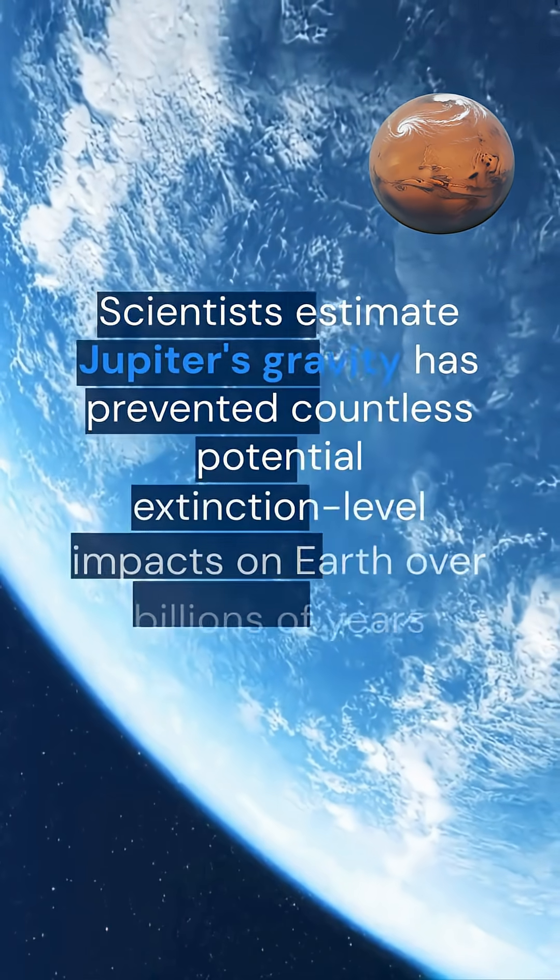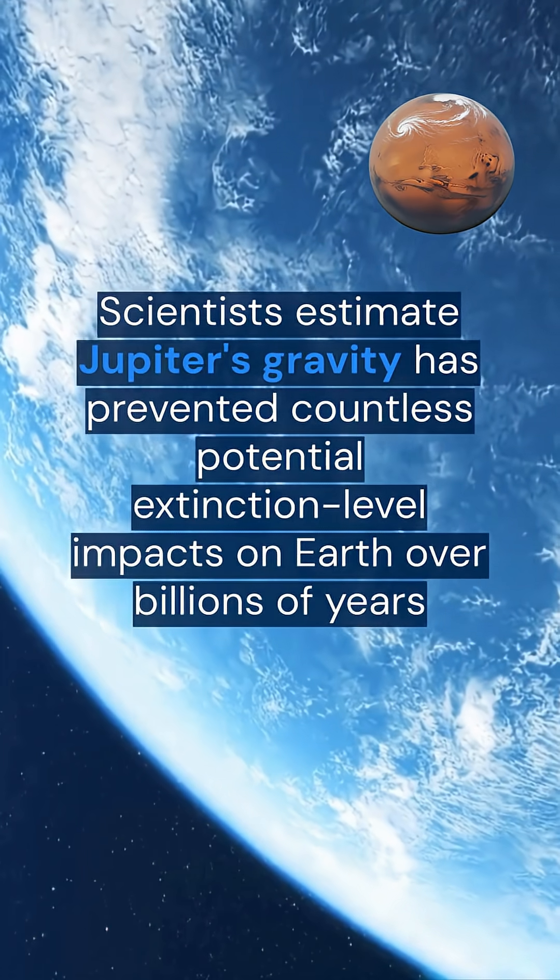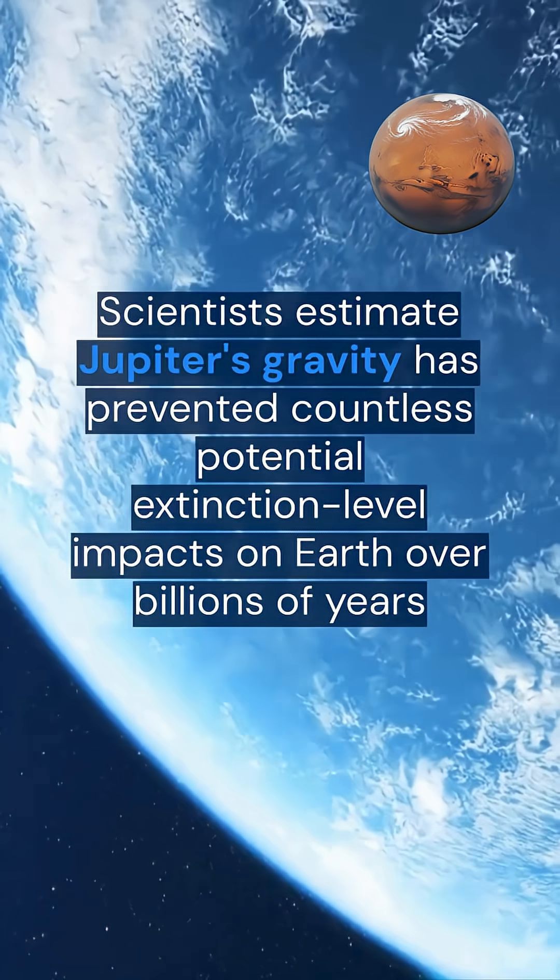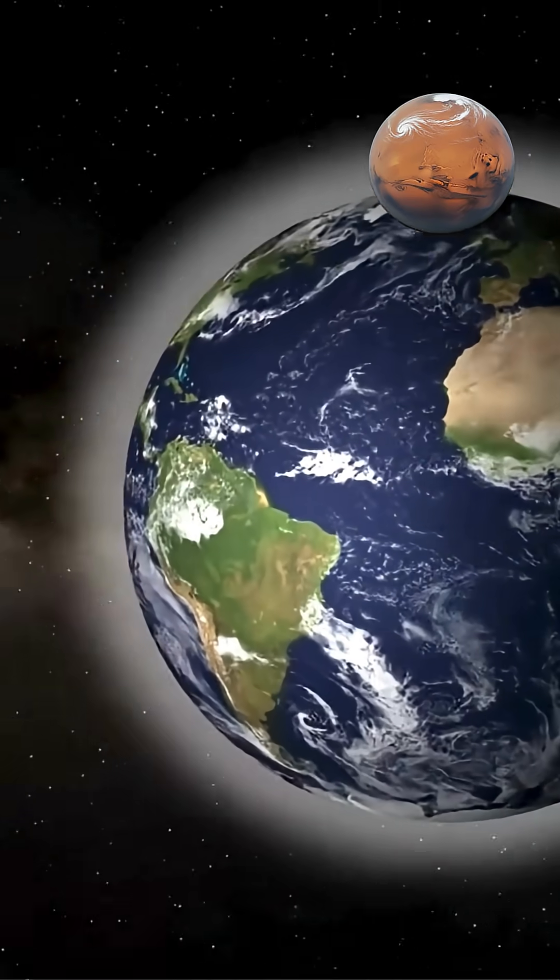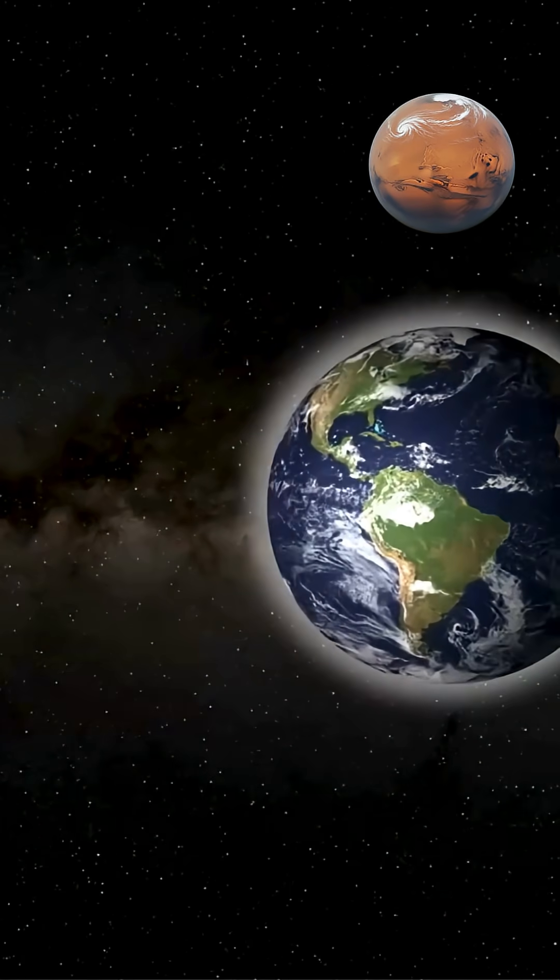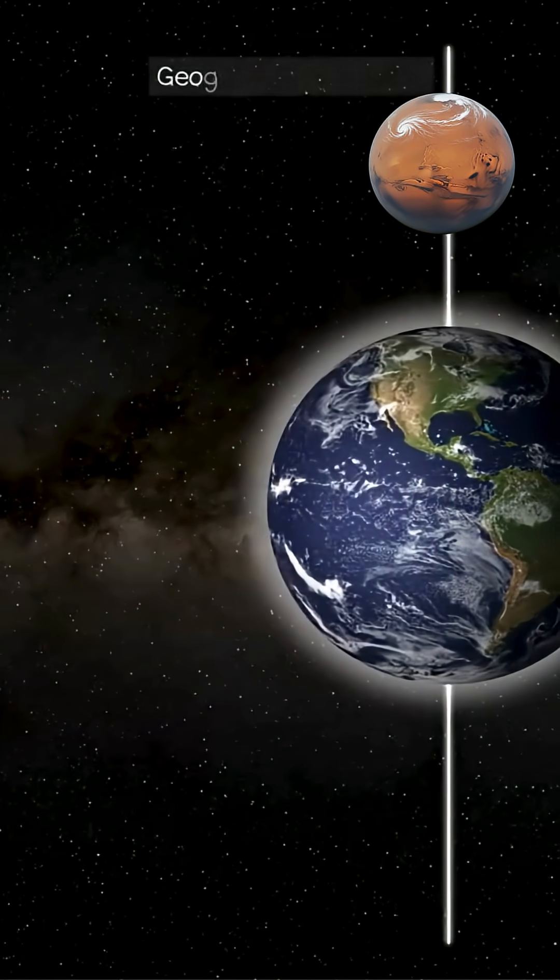Scientists estimate Jupiter's gravity has prevented countless potential extinction-level impacts on Earth over billions of years. Magnetic field strength correlates directly with Jupiter's size and rapid rotation.